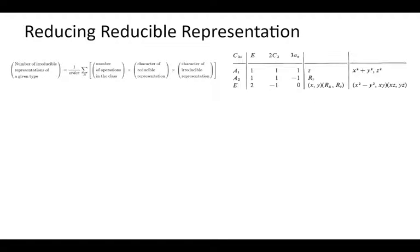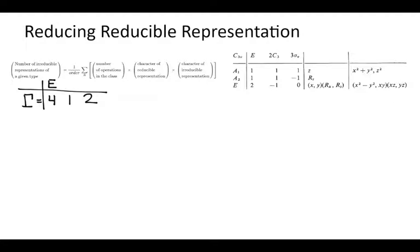This video is about how to reduce a reducible representation to the sum of irreducible representations. Let's consider this reducible representation in the C3V point group. We've determined that the representation equals 4, 1, 2, where those numbers represent the E, the C3, and the sigma V classes.